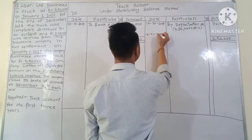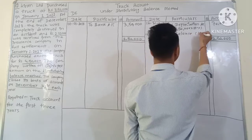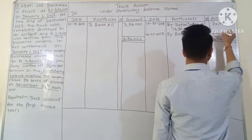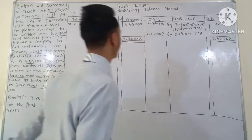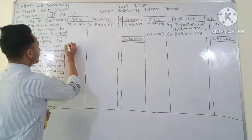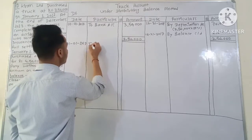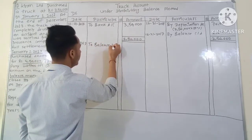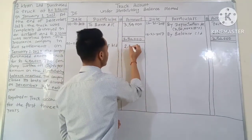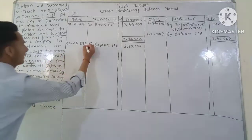By balance carried down: 3,50,000 minus 70,000 equals 2,80,000 rupees. So the closing balance at the end of 2017 is 2,80,000, which is carried down to the credit side and brought down as the opening balance for 2018.